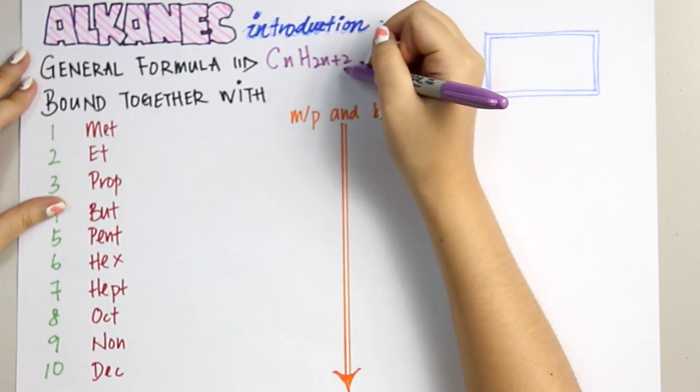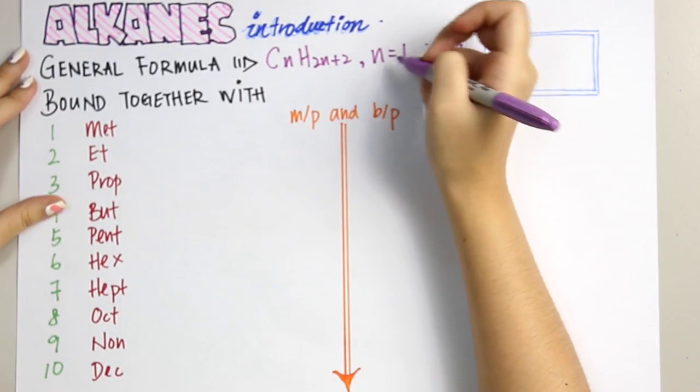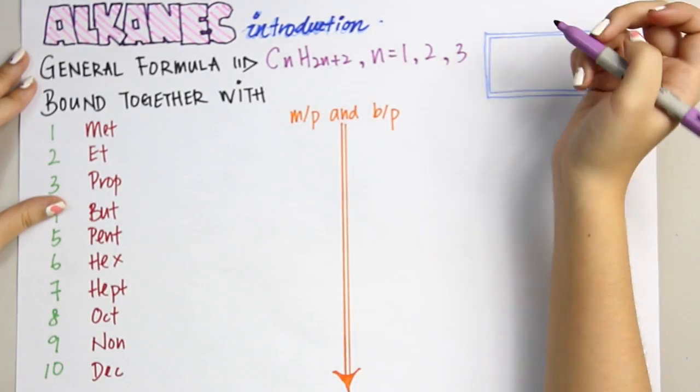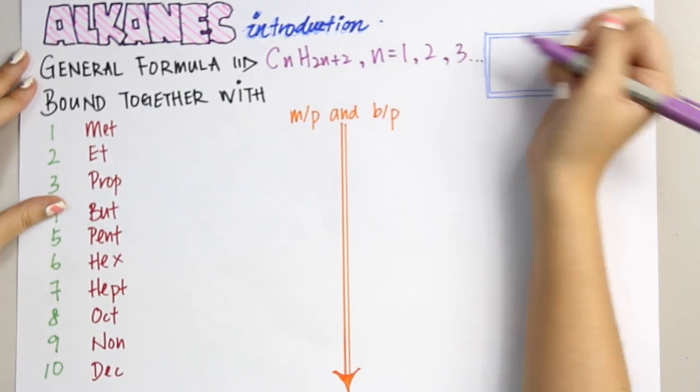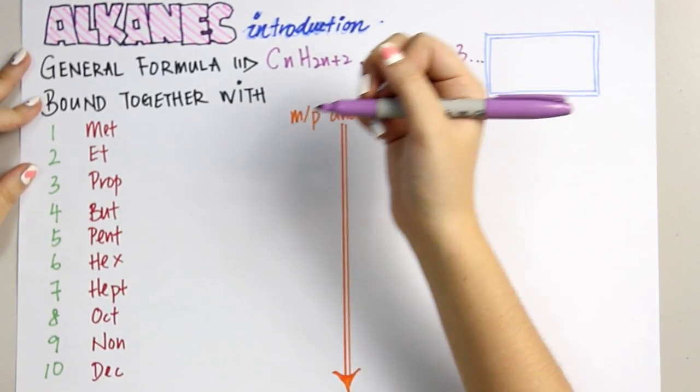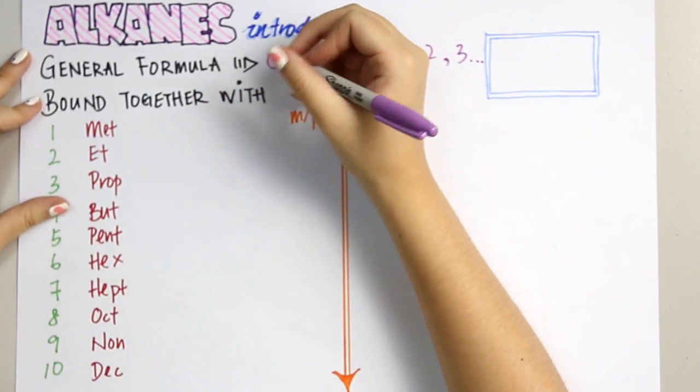CnH2n+2, where n represents the number of carbon atoms: 1, 2, 3, and so on. As I mentioned just now, alkenes are carbon atoms bound together with single covalent bonds.